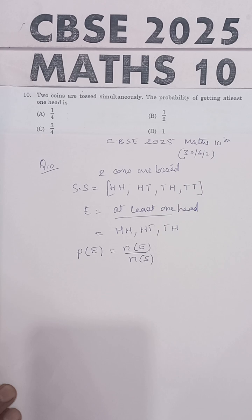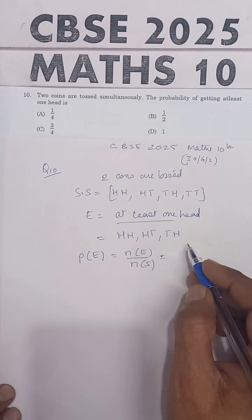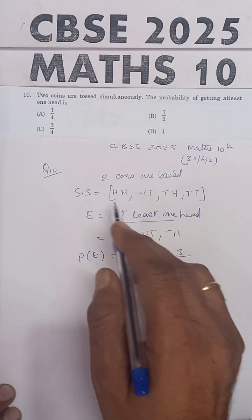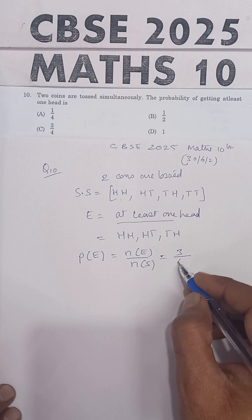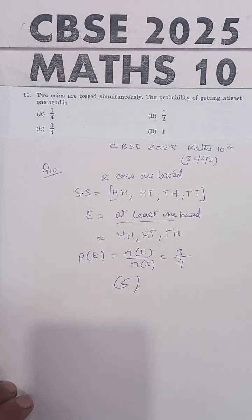N(E) is 4... Number of possibilities which are favorable to this event is 3, and the total number of cases—1, 2, 3, and 4 in the sample space—is 4. So 3 by 4 is the answer, which is given in option C. Option C is the correct answer.